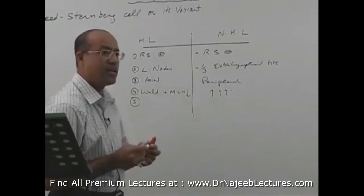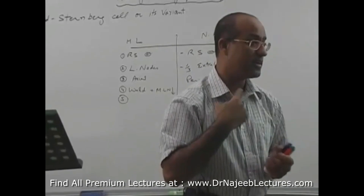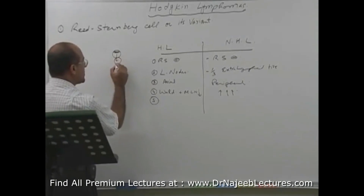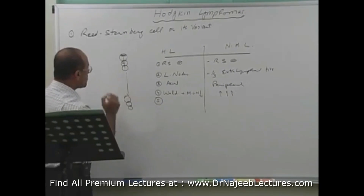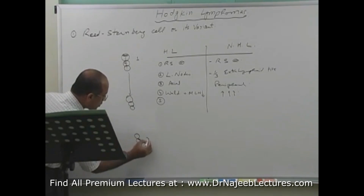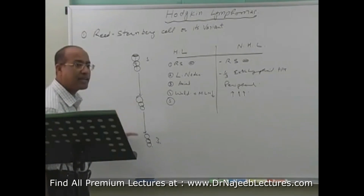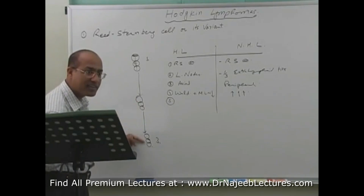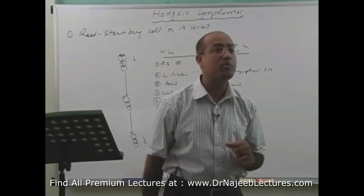A very important difference: in Hodgkin's disease the spread is very orderly. If Hodgkin's disease starts from one lymph node, it will go to the adjacent lymph node, then to the next, and then to the next group. It will not skip from the first group to the third group — Hodgkin's moves in a very orderly, stepwise, contiguous fashion. Non-Hodgkin's, by contrast, may spread through the body in a random fashion.